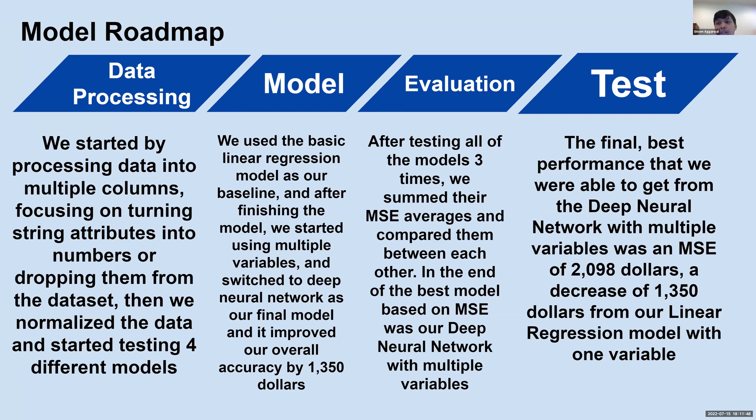The second part of this roadmap is the model. We started with the basic linear regression model. After finishing the model, we started experimenting, using multiple variables and switching to the deep neural network model. Our final model was the deep neural network model. It improved our overall accuracy by $1,350.